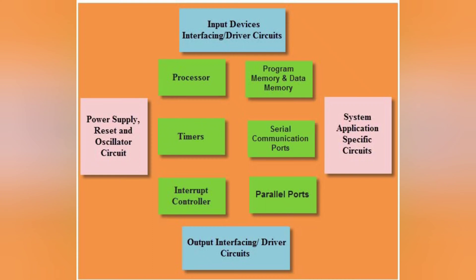The embedded system can be interfaced with external peripheral devices. For that, there is required interfacing circuitry or driver circuitry. Input devices take data from the external world and give it to the embedded system. Similarly, output interfacing driver circuitry allows the microcontroller to send data to external peripheral devices, such as an LCD display, monitor, or printer.